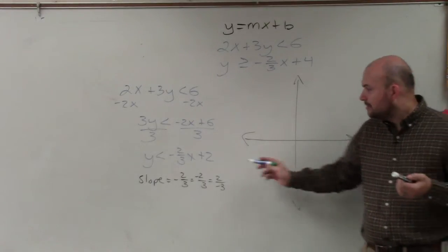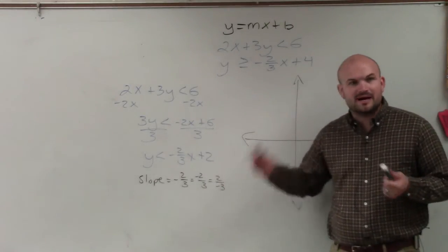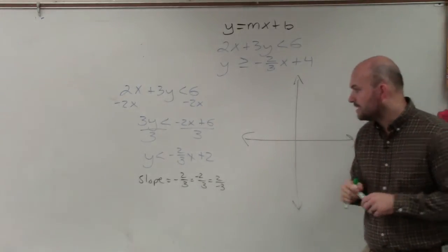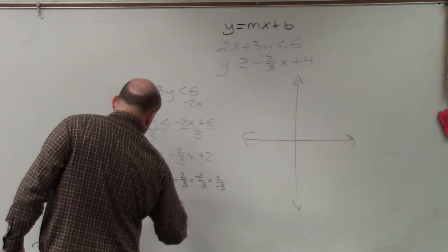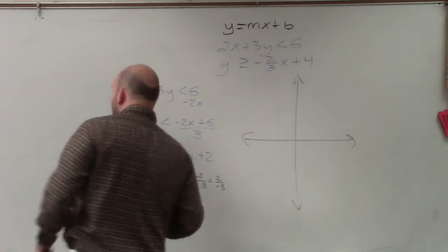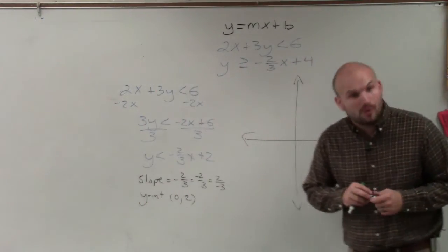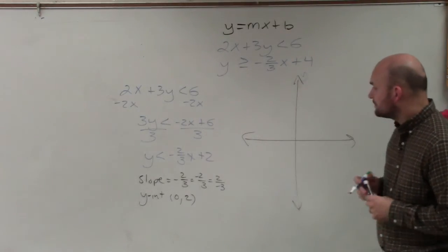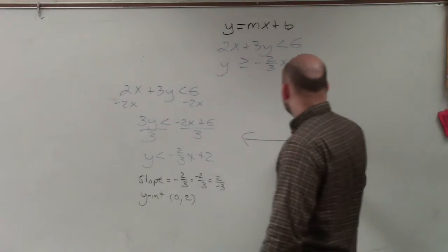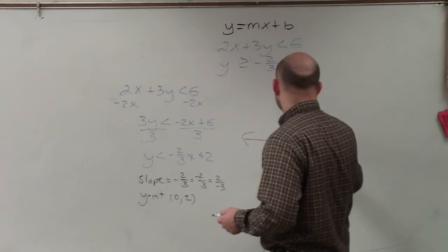But when graphing, we usually want to have the negative in the top or the bottom so we can tell as far as our rise and our run. Then we need to determine the y-intercept. I always like to write the y-intercept as a coordinate point. What that does is that reminds me that it is a point. It is an intersection of the y-axis, which is right there. So first thing I'm going to do is I'm going to plot the y-intercept, which is at 0, 2.